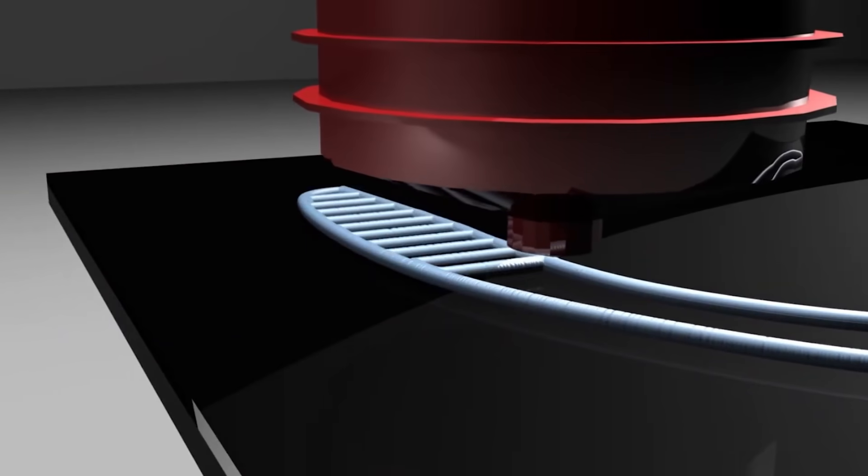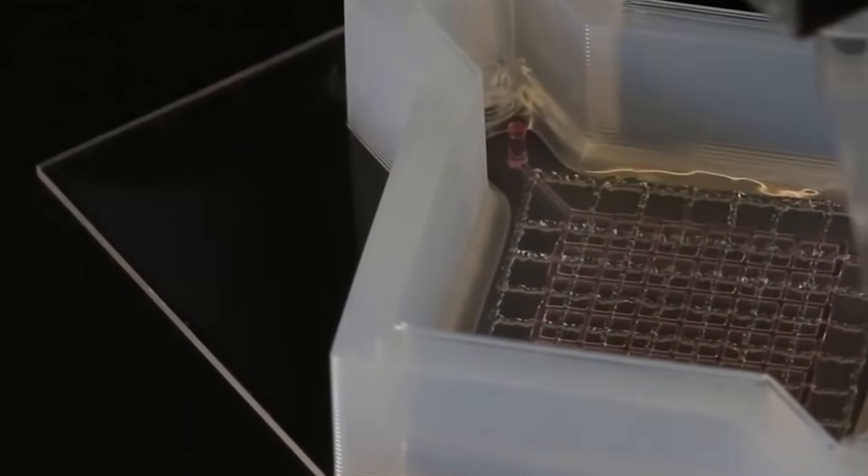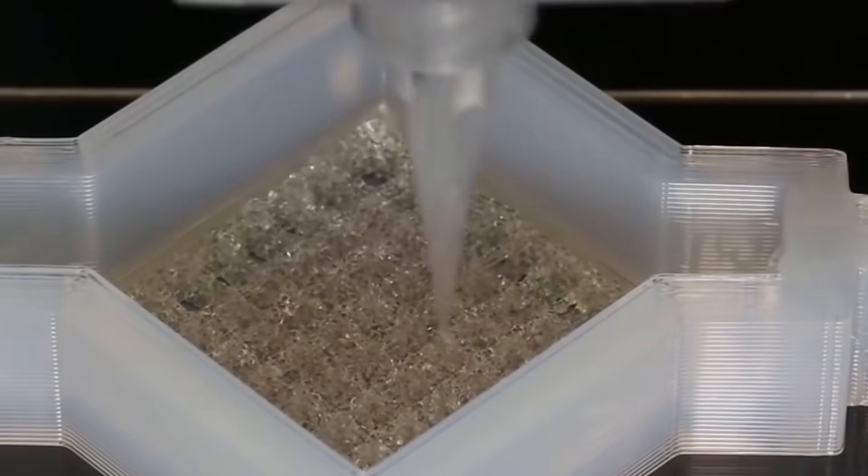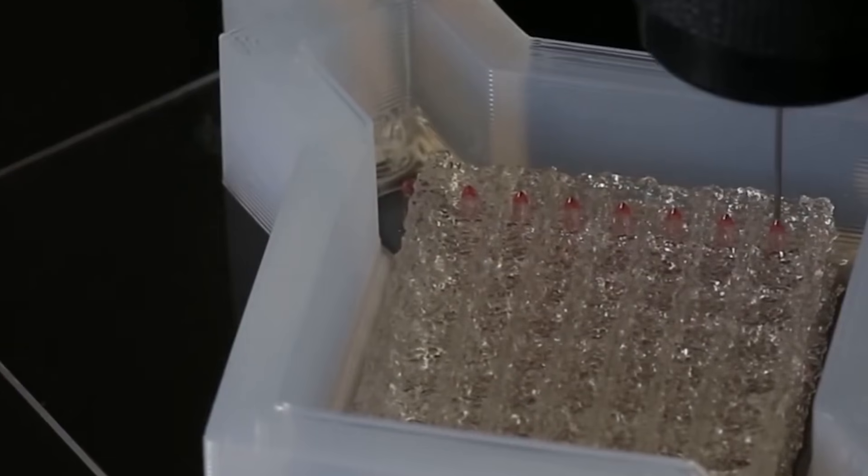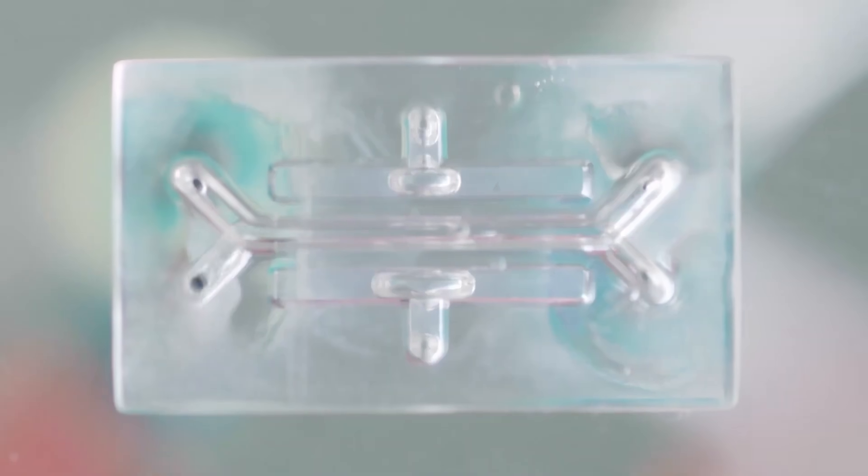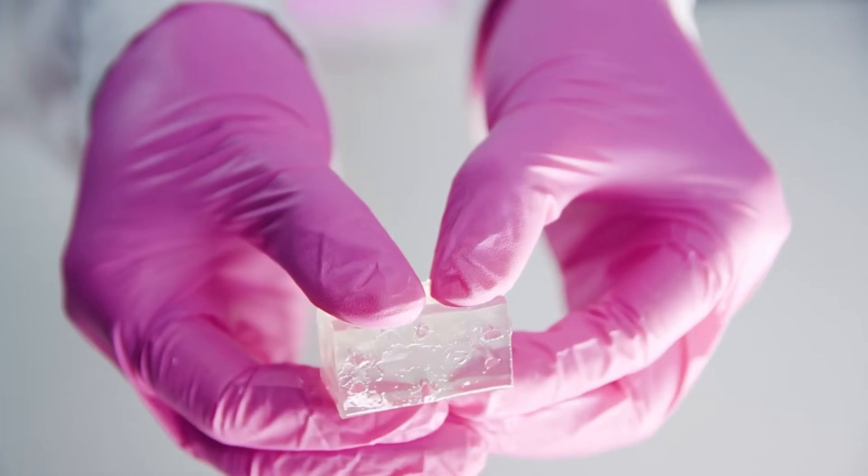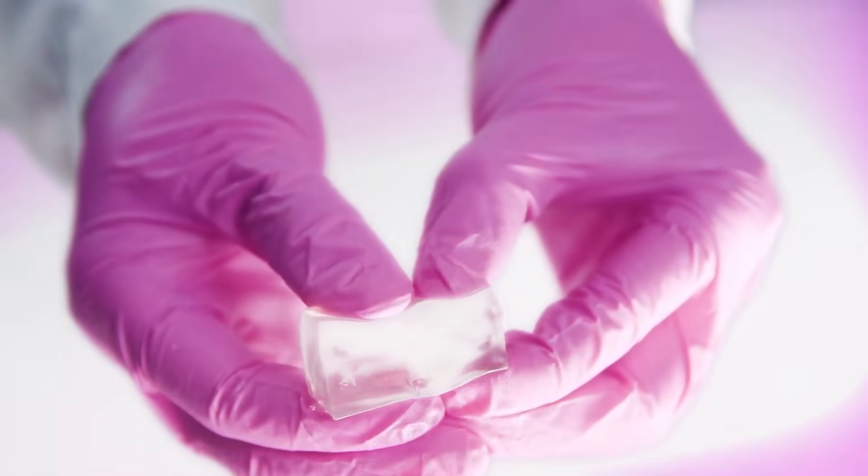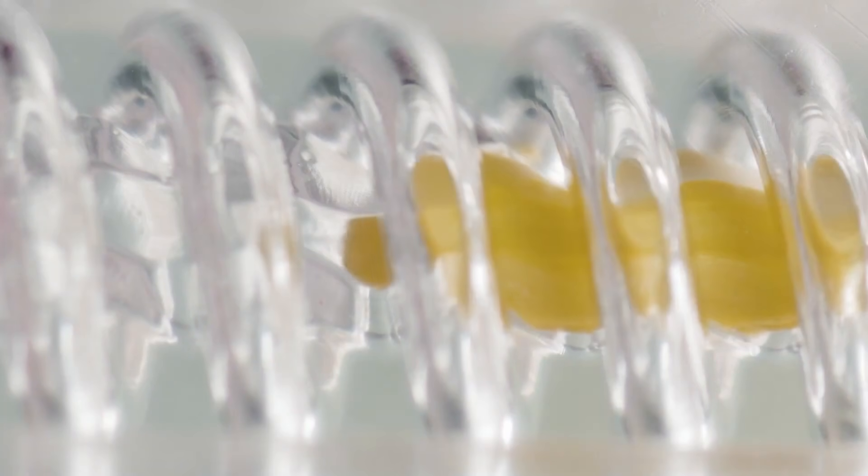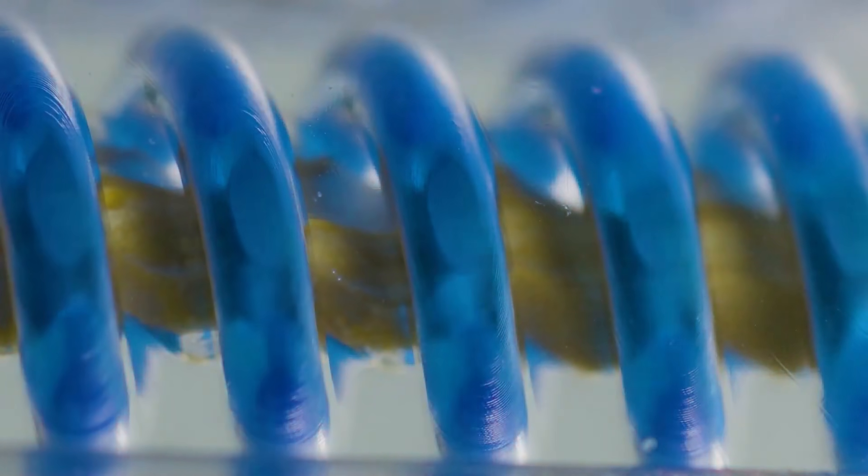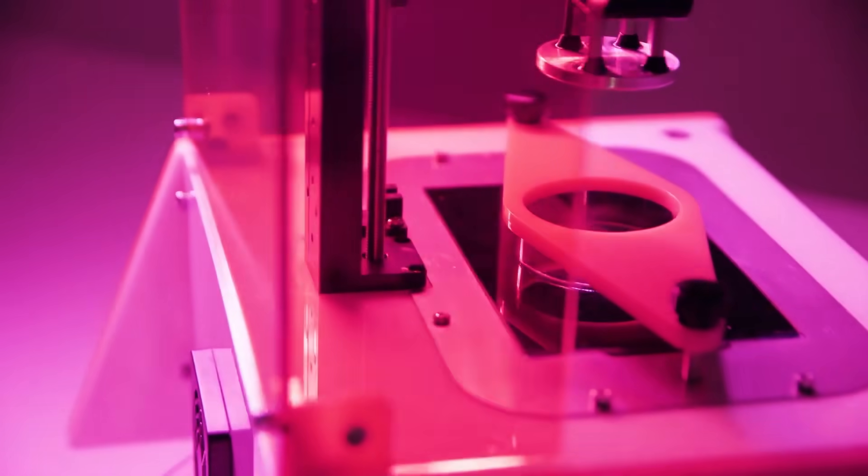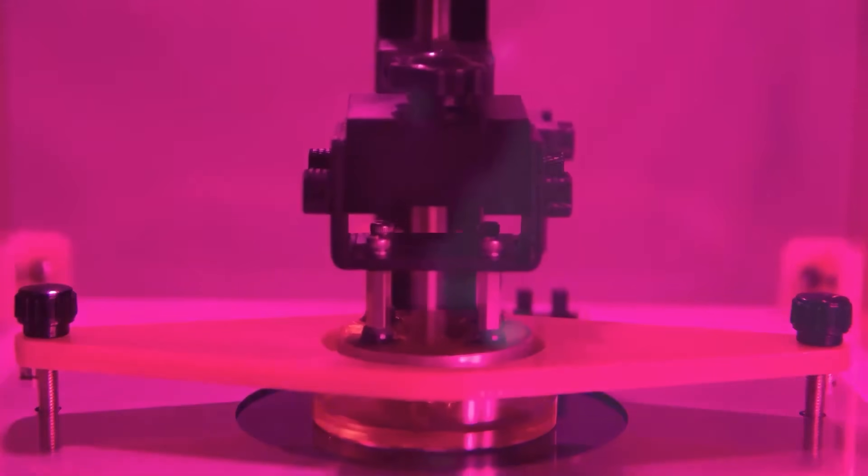Customization also extends to the cell composition where a patient's own cells can be used to reduce immune rejection risks. Different cell types, growth factors, and scaffolds can be strategically placed to mimic the natural architecture of tissues, such as layering epithelial cells on top and vascular cells inside to create functional blood flow channels. Precision in bioprinting also allows researchers to control pore size, density, and mechanical properties of the tissue to match physiological requirements. This level of customization not only enhances compatibility but also accelerates healing and integration when transplanted.